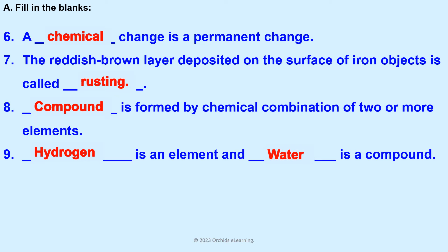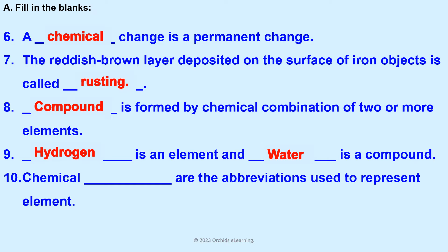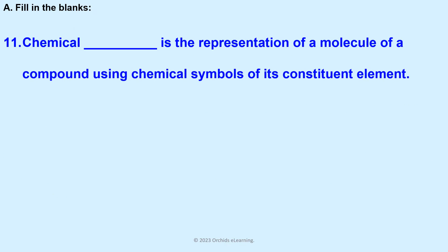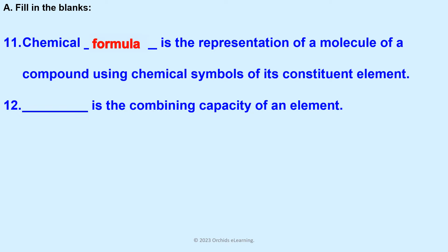A compound is formed by chemical combination of two or more elements. Hydrogen is an element and water is a compound. Chemical symbols are the abbreviations used to represent an element. A chemical formula is the representation of a molecule of a compound using chemical symbols of its constituent elements. Valency is the combining capacity of an element.